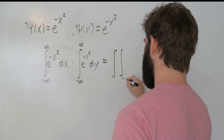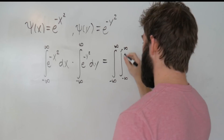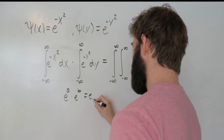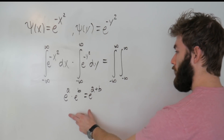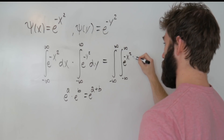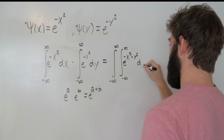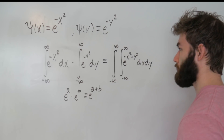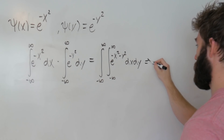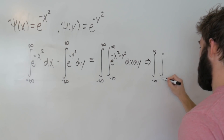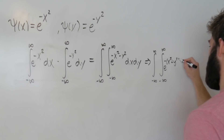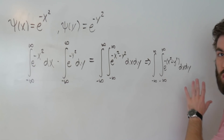We can rewrite this double integral more cleanly, keeping the same limits — negative infinity to infinity for both variables — and exploit the fact that e to the a times e to the b equals e to the a plus b. Using this relationship, we combine the two exponents to get the integral of e to the minus x squared minus y squared, dx dy. Factoring out the minus one, that becomes e to the minus quantity x squared plus y squared.